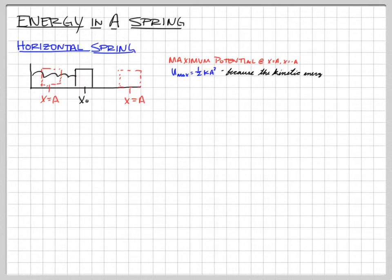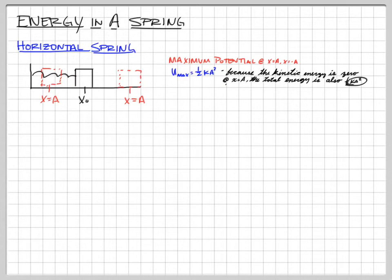Because there's no kinetic energy at the amplitude — since we've stopped and are coming back — the total energy at x = A is also just potential energy: ½kA². So that's my total energy for the problem: ½kA². And we know that total energy never ever changes.